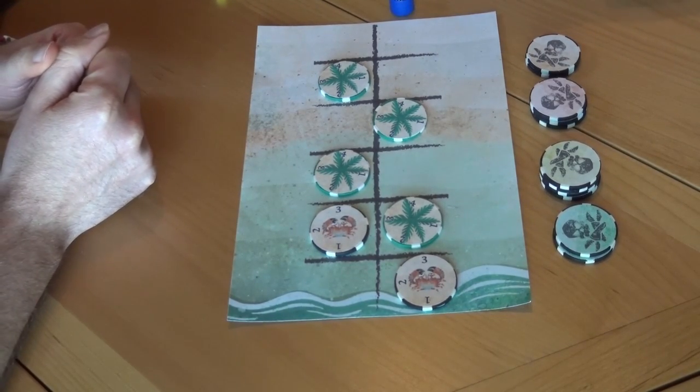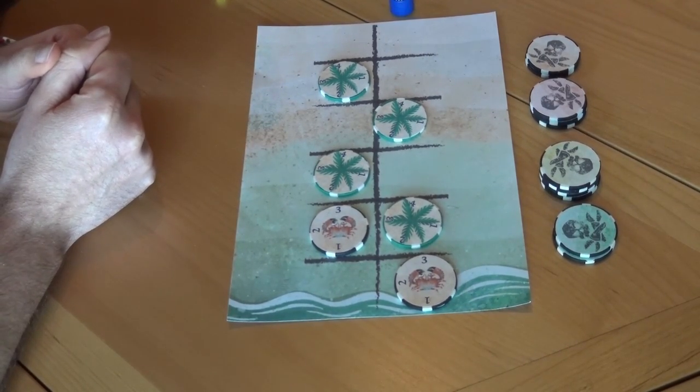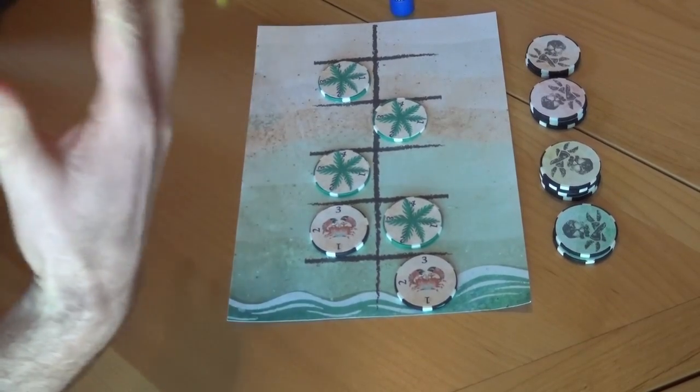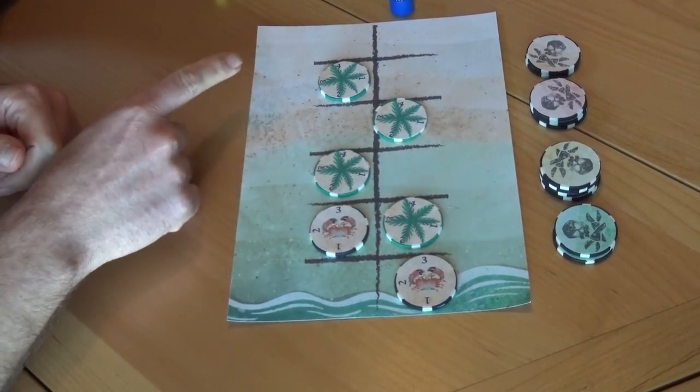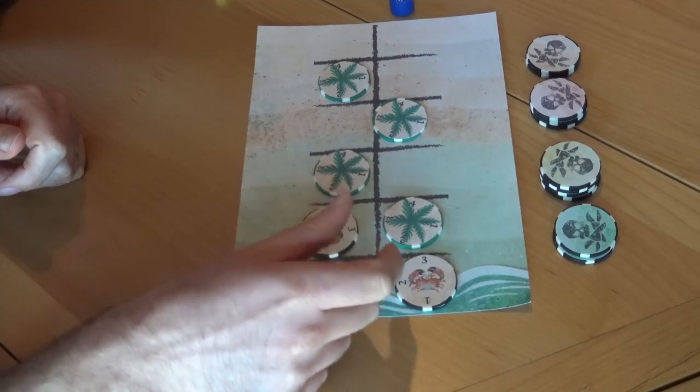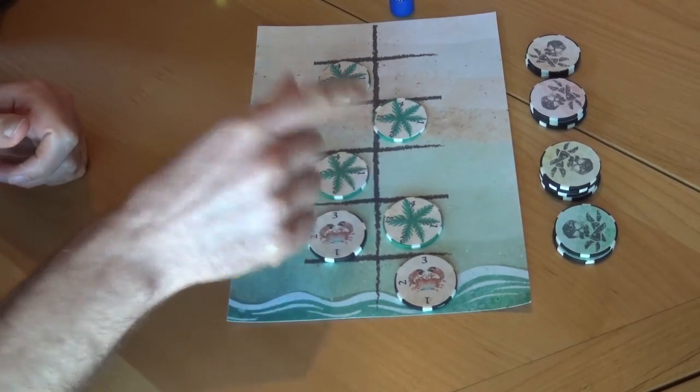Or the player whose crab gets to the top loses. We're both basically competing to see who can survive the longest. Every time they get hit, they're going to wind down. That's why they have the numbers on them. Same with the trees here.